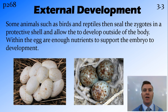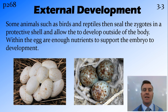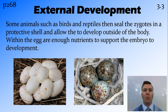Once internal fertilization has occurred, this still doesn't mean that the zygote will reach maturity inside the female. Some animals have external development, where they put a protective shell around the zygote and expel it outside the body. This means all the nutrients that the zygote needs to develop until it hatches must be contained within the egg — a lot of energy goes into it, which wouldn't be possible with external fertilization.